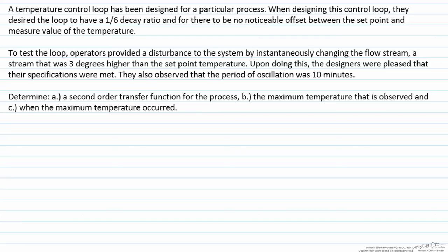The operators tested this by making an instantaneous change in the temperature of the input, and when doing this they got the lack of an offset and they got the one-sixth decay ratio. They also found the period of oscillation was ten minutes. So based on this information we're being asked to find a second order transfer function for the process, determine the maximum temperature that occurs, and when that maximum temperature occurs.